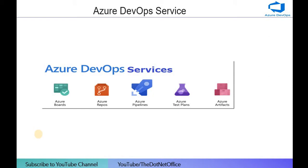In Azure DevOps there are five main services. The first is Azure Boards, where we maintain work items — to whom a particular work item is assigned and what is its status. The second is Azure Repos, which is a repository that contains information about the source code, including which developer committed the code, versioning, code review, and testing for that particular code.